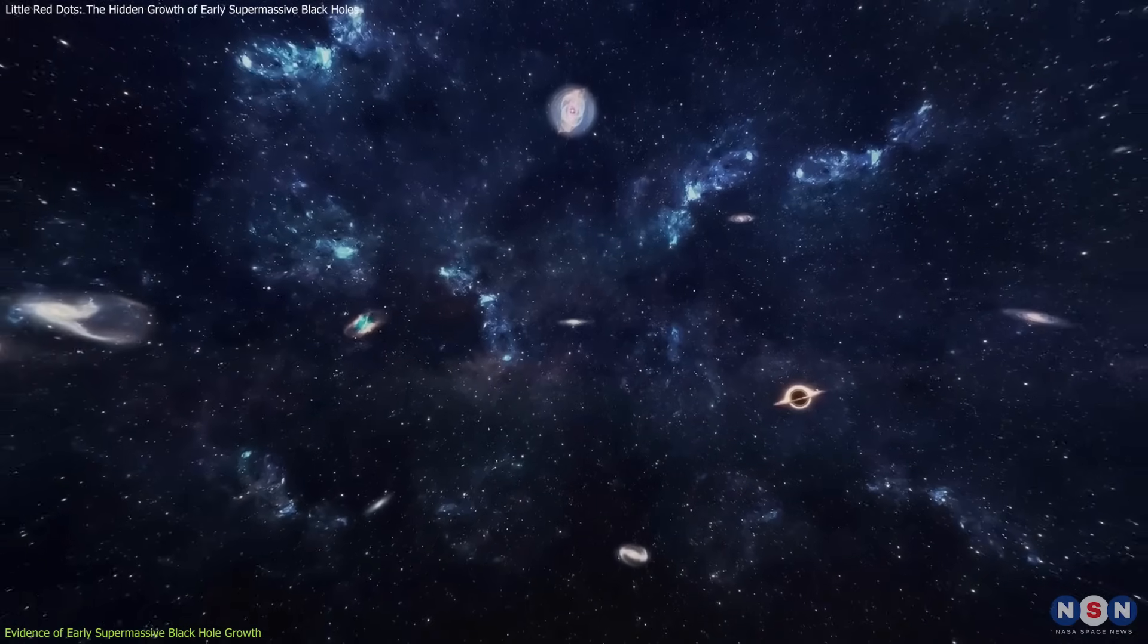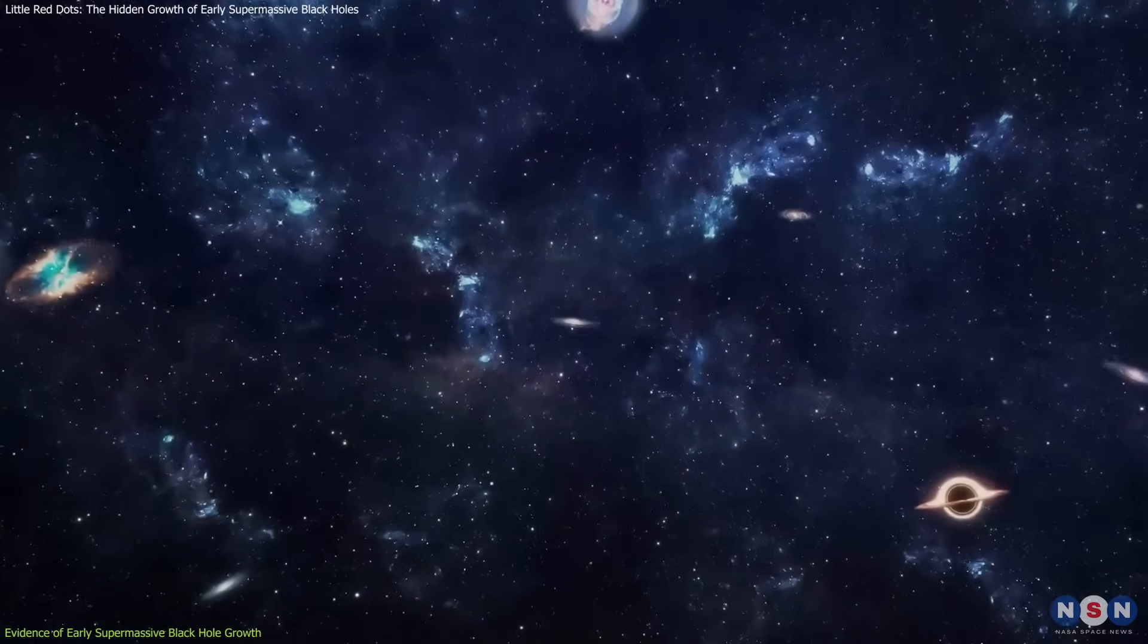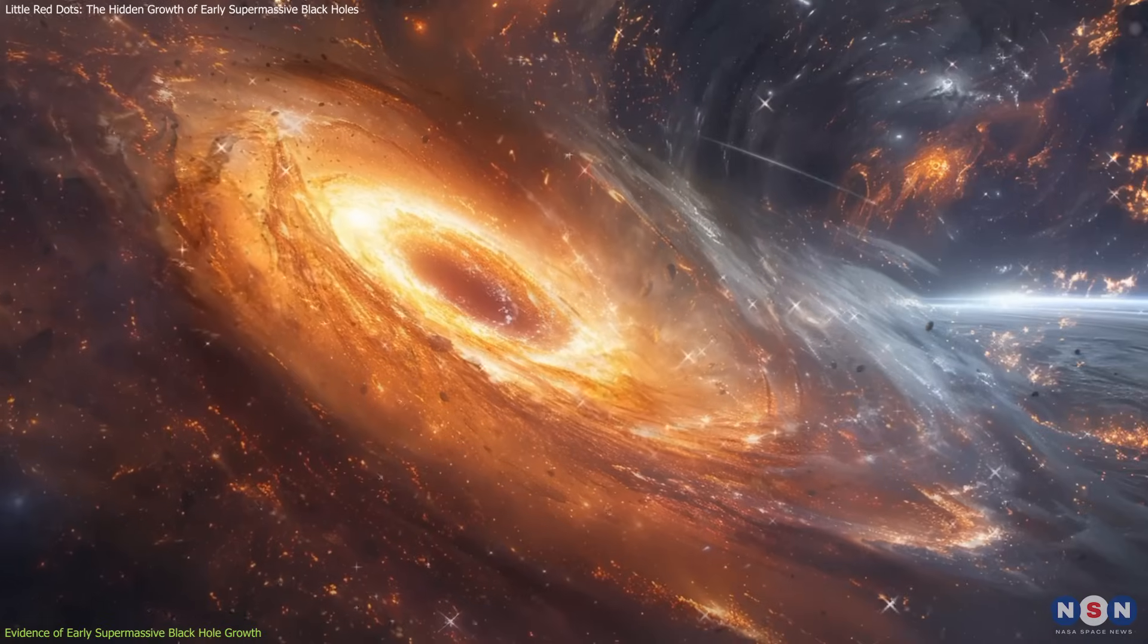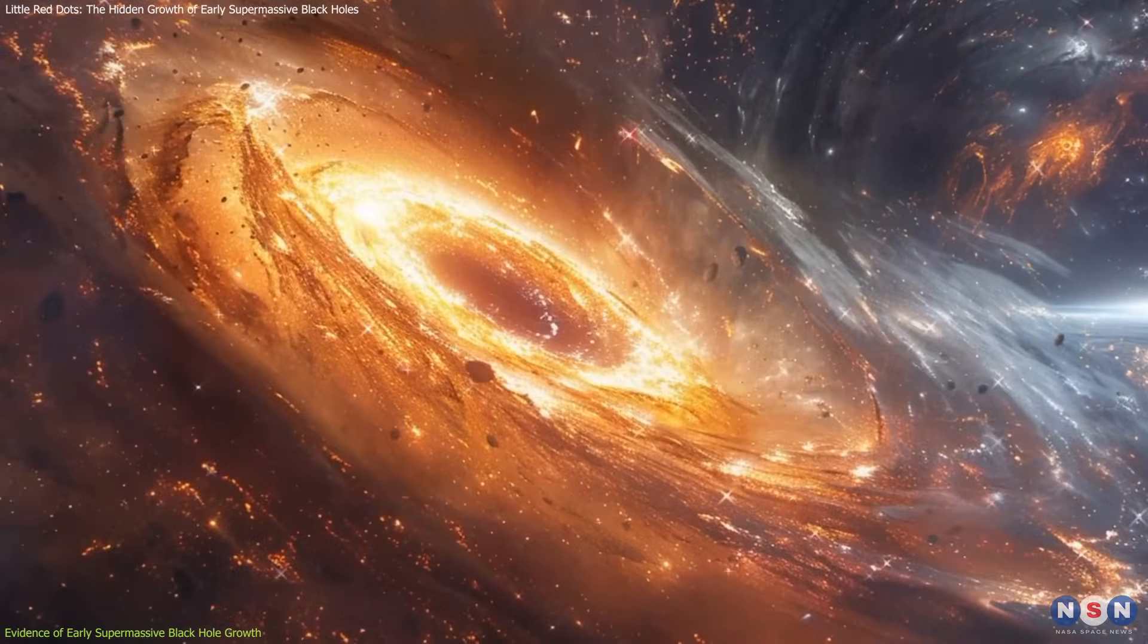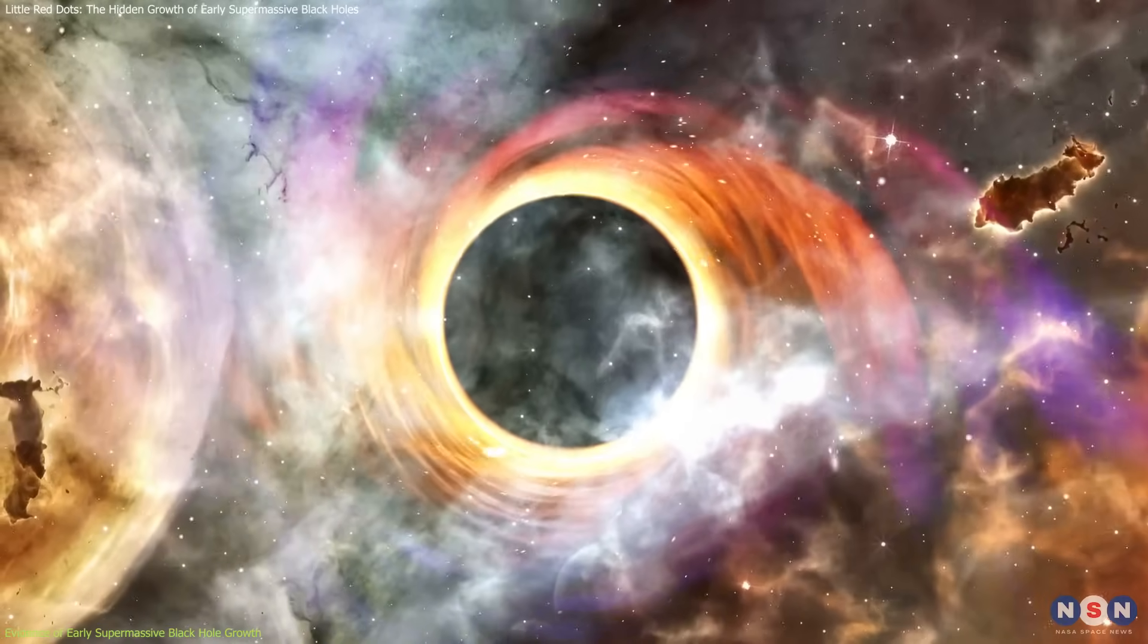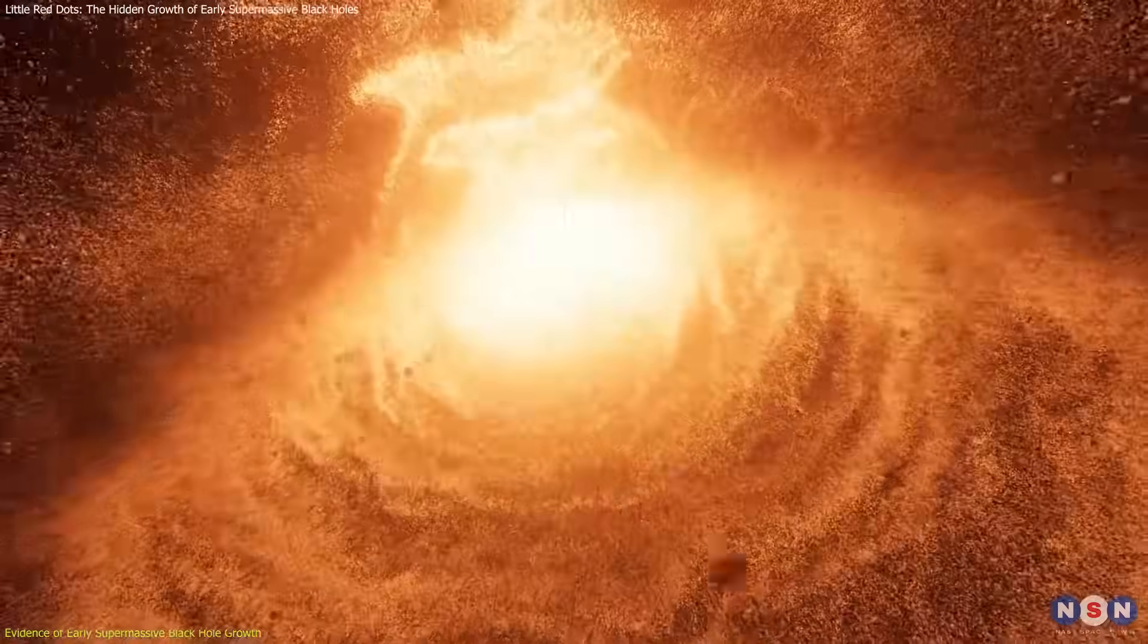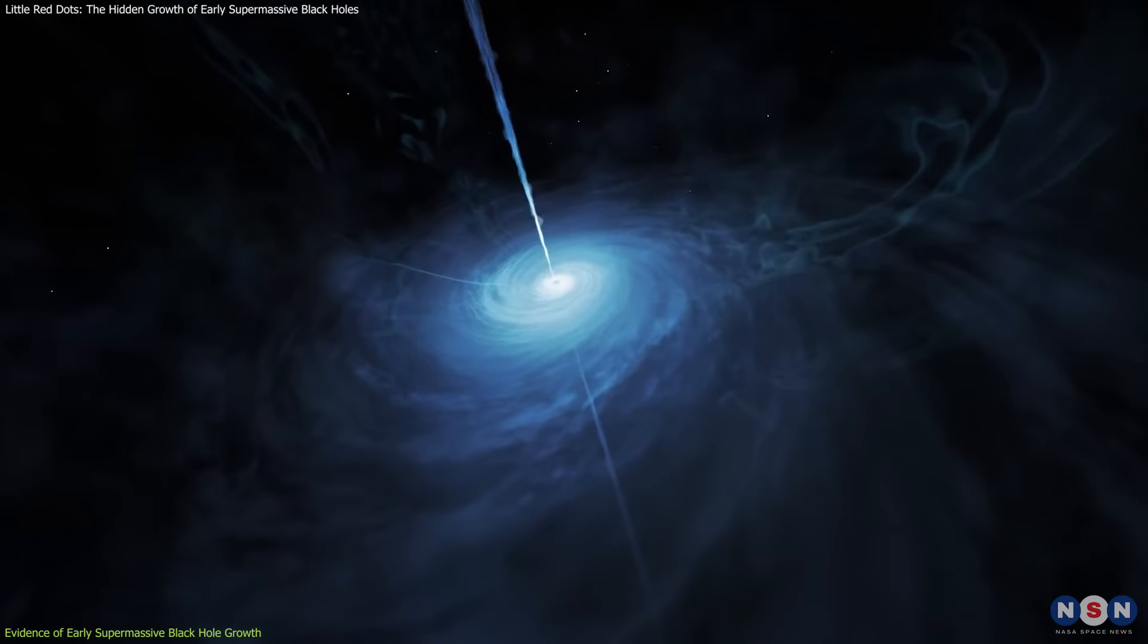Interestingly, this model explains why we don't see LRDs in the nearby universe. If these black holes are growing at the Eddington limit, they would quickly clear the surrounding ionized gas as they continue consuming matter. As this cloud dissipates, the LRDs evolve into traditional AGNs, becoming the bright quasars and black hole-powered galaxies we observe throughout cosmic history.